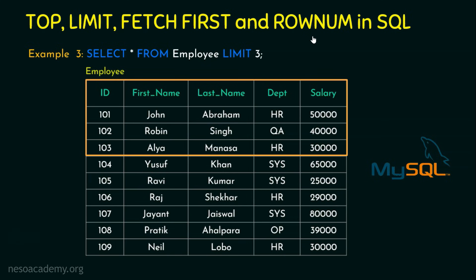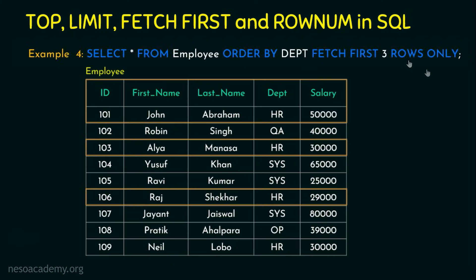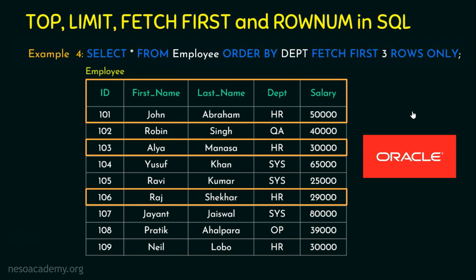Now let's move on to Example 4 with the same table. Example 4 is: SELECT * FROM employee ORDER BY department FETCH FIRST 3 ROWS ONLY. The output is going to be the first three rows, ordered by the HR department. The FETCH FIRST n ROWS ONLY keyword is available in Oracle.